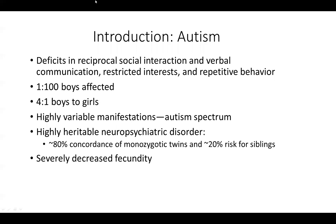Autism is highly variable in its phenotypic presentation — from autistic kid to autistic kid, the differences can be enormous. Kids differ both in the severity of their core symptoms but also in many other phenotypes and comorbidities associated with the disorder. Importantly for a genetic disorder, it has been determined that it is highly heritable and that genetics certainly plays an important role.